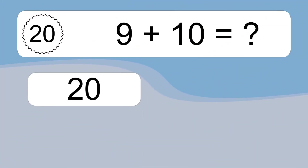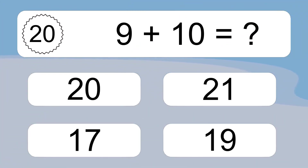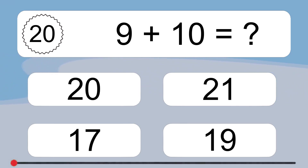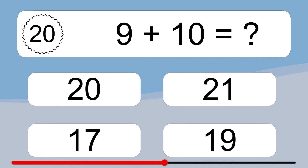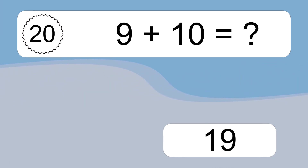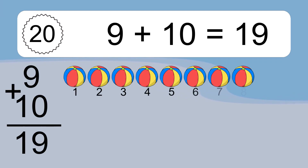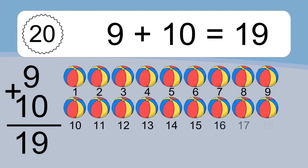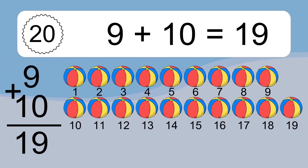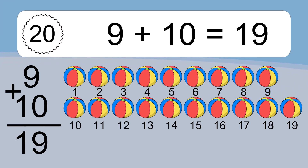9 plus 10 equals what? 9 plus 10 equals 19. Let's count it. 1, 2, 3, 4, 5, 6, 7, 8, 9, 10, 11, 12, 13, 14, 15, 16, 17, 18, 19.